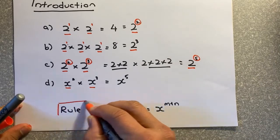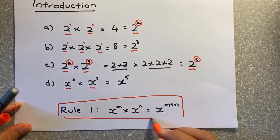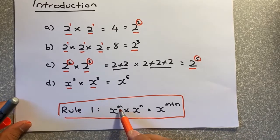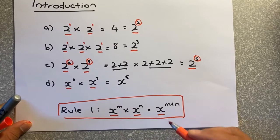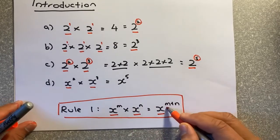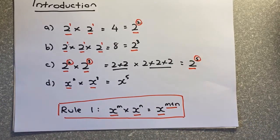So the rule 1, please take note, is this rule. If you have x power m times x power n, the base is the same, you just need to add the 2 powers, and that will give you the answer, x to the power of m+n.